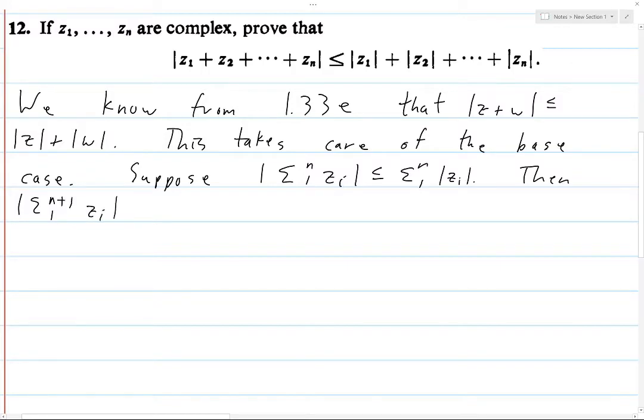Plus z_{n+1}. We use the base case with z equal to the entire sum and w equal to z_{n+1}. This gives us that the norm is less than or equal to the norm of the sum from 1 to n of z_i, plus the norm of z_{n+1}.